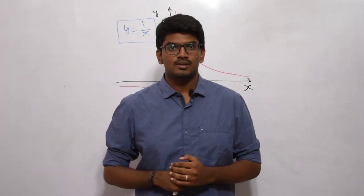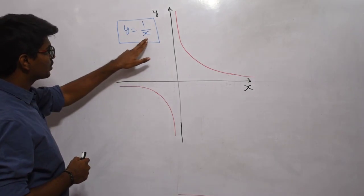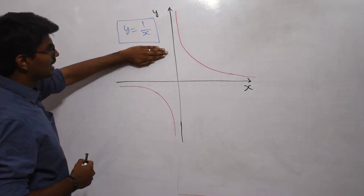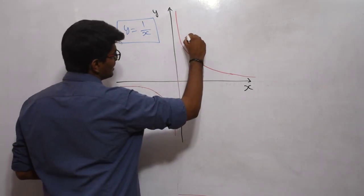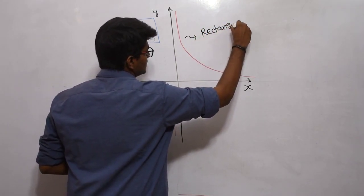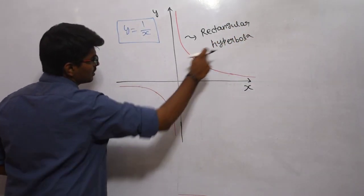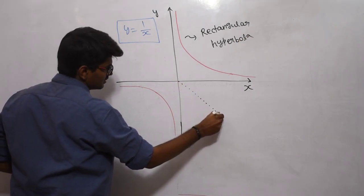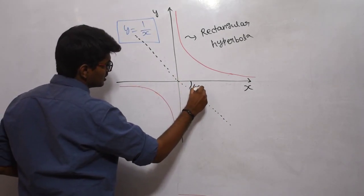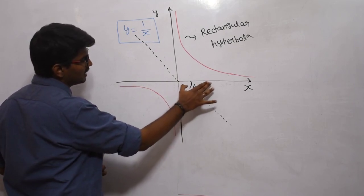There is another type of hyperbola. This type has the function y = 1/x, which is nothing but a reciprocal function. If you have an equation like this, it represents a hyperbola called a rectangular hyperbola. This rectangular hyperbola is symmetric about an axis at 45 degrees to the x and y axes.